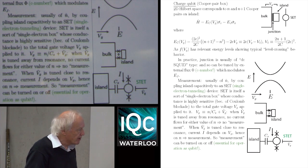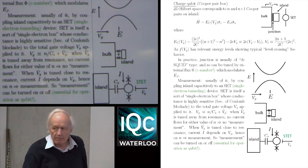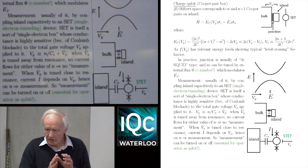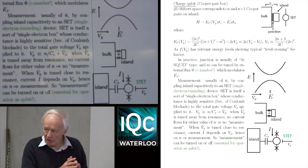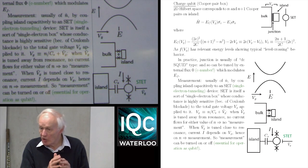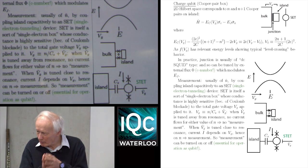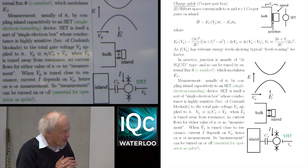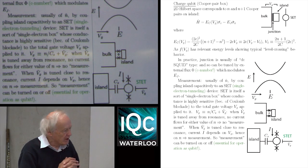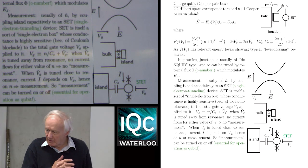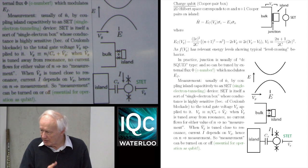Crudely speaking then, your principal variable in this case is the extra charge — zero or two (in terms of Cooper-pairs) — on the island, and you try to measure that by the SET.